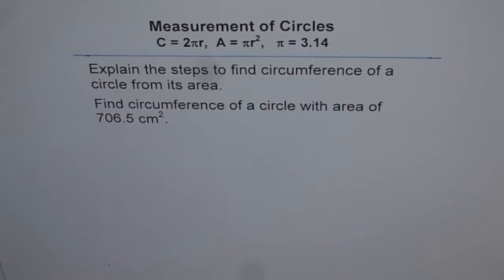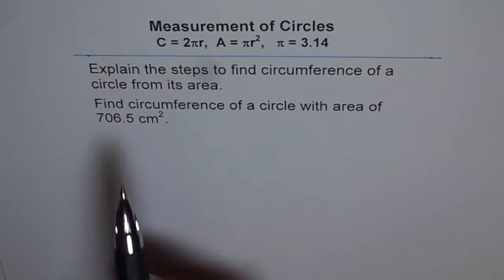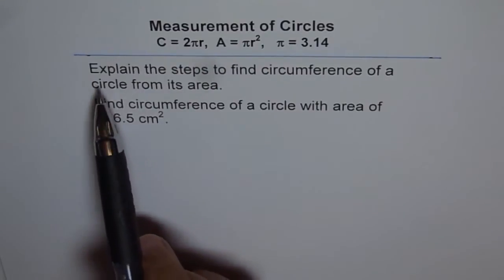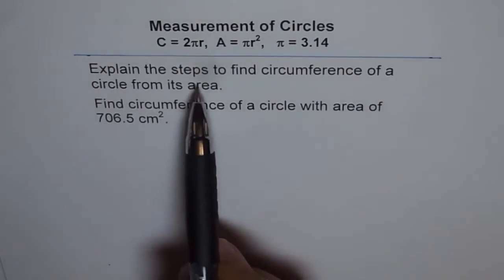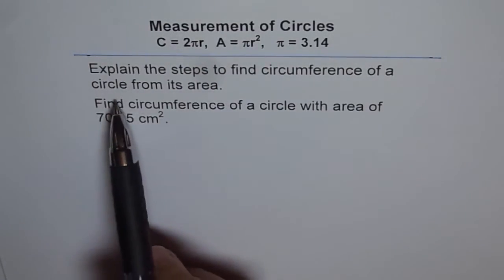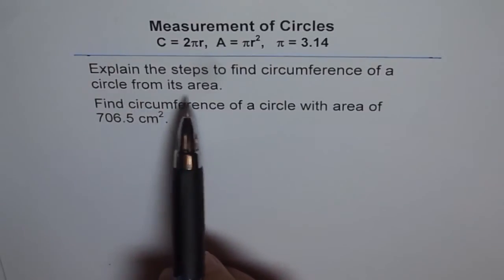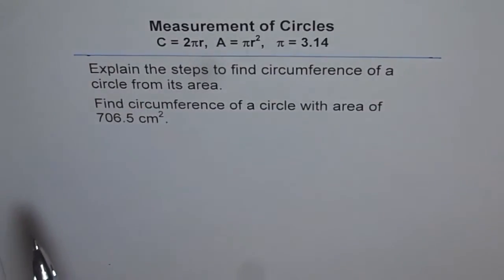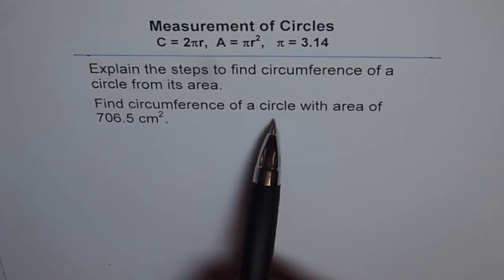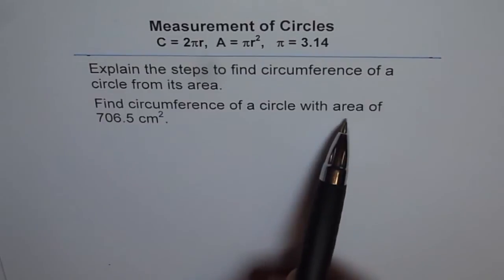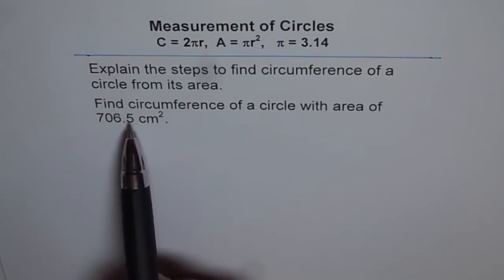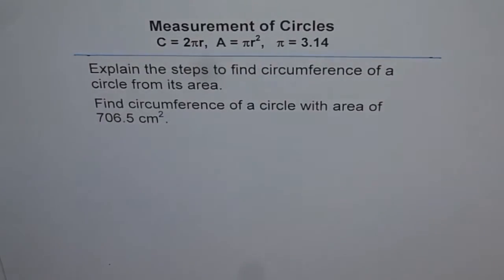Here is a thinking problem about measurements of circles. Explain the steps to find the circumference of a circle from its area. Then find the circumference of a circle with an area of 706.5 cm².